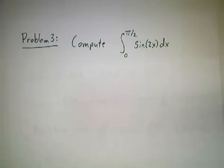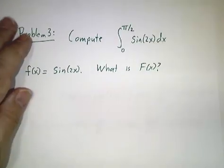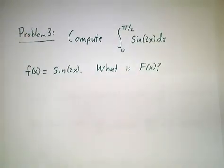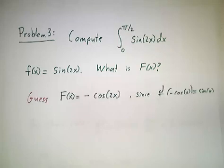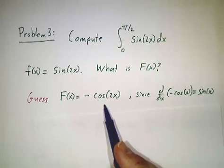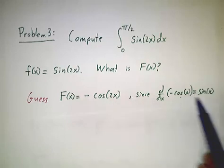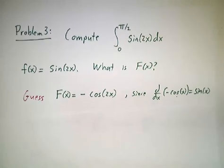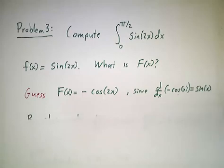This is a little bit tricky because you might not immediately think of a function whose derivative is sin(2x). You might guess -cos(2x) because the derivative of negative cosine is sine, but that isn't quite right because you've got to use the chain rule.